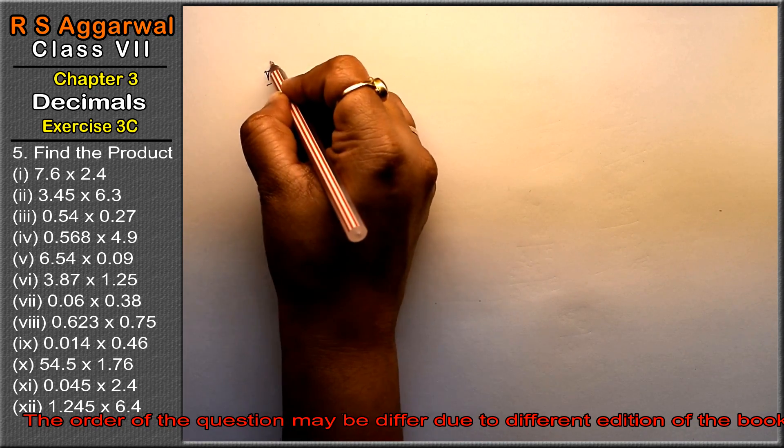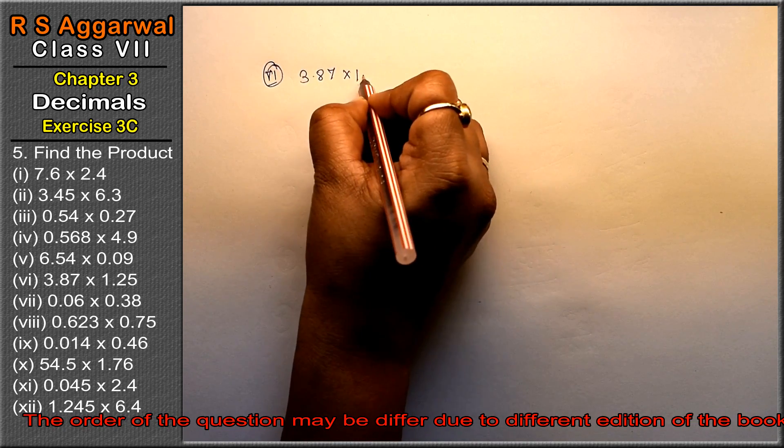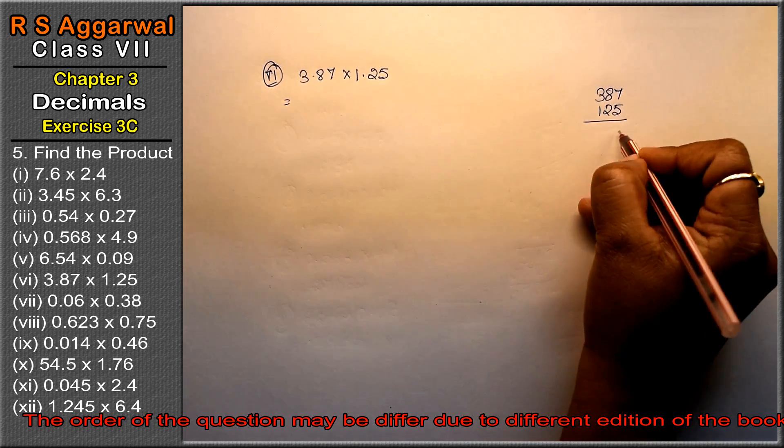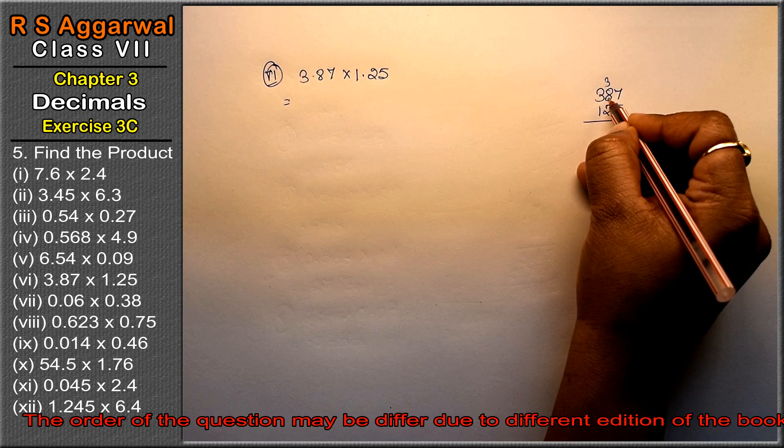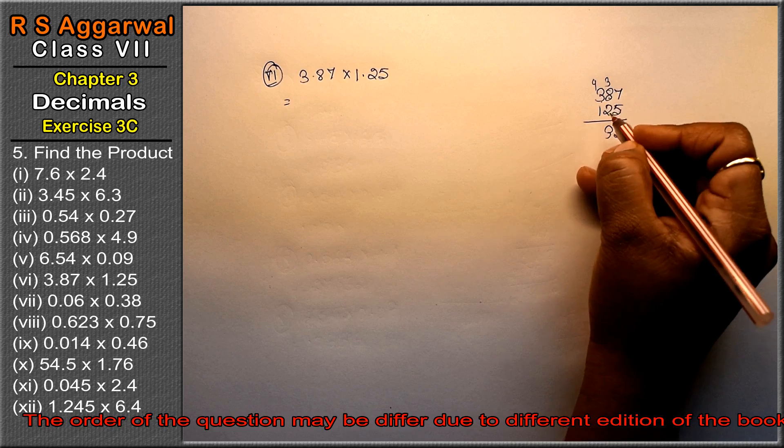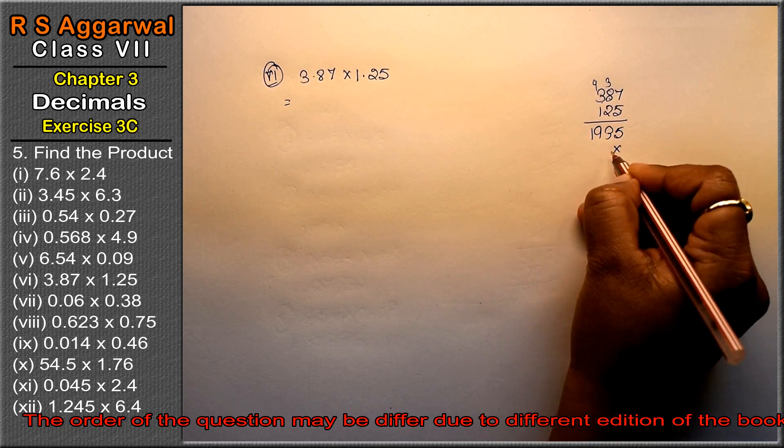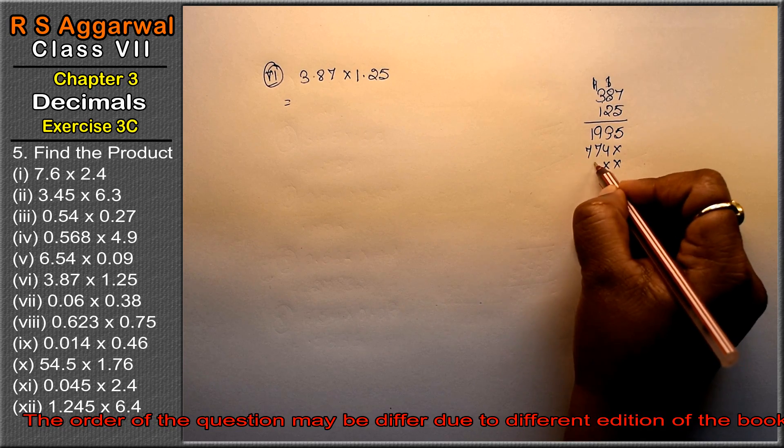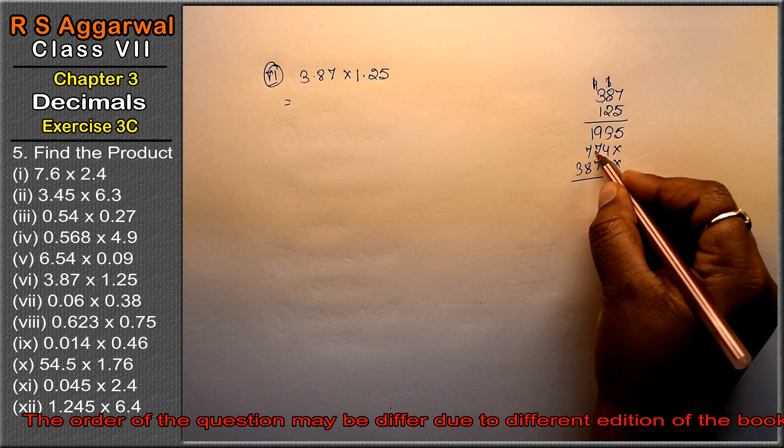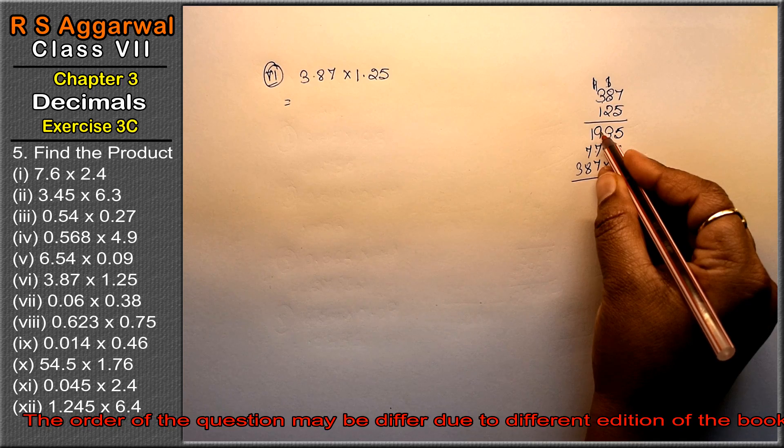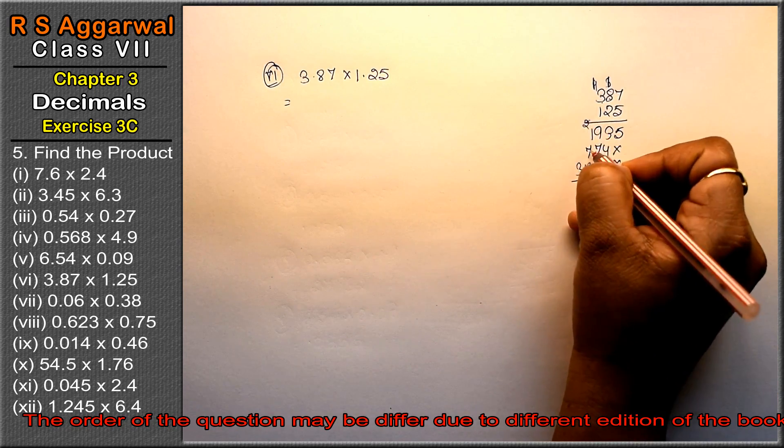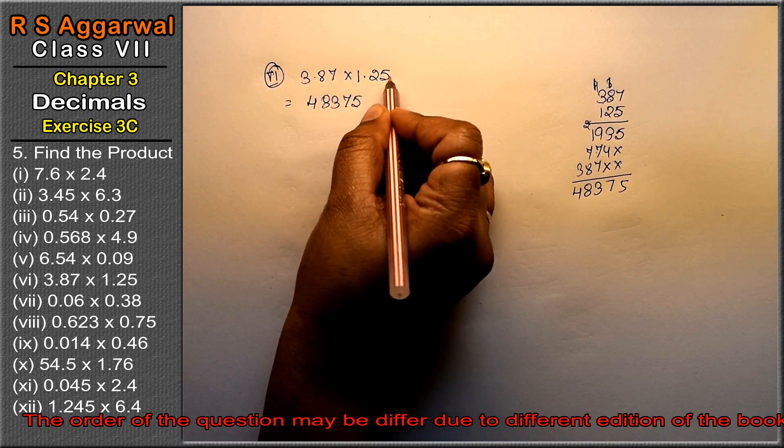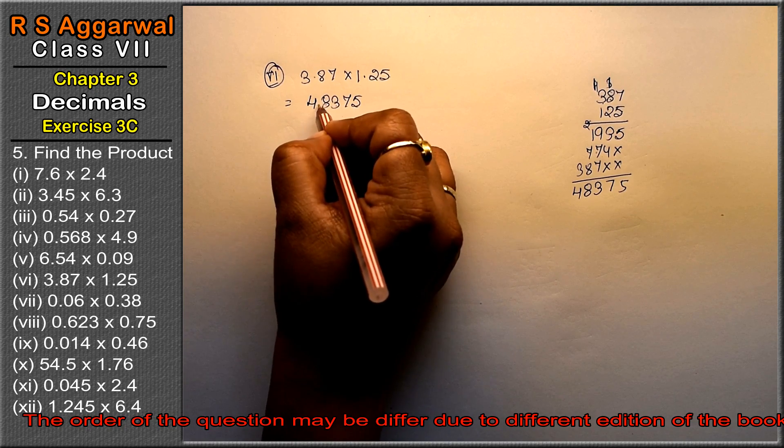Let's do sixth part: 3.87 into 1.25. Multiply 387 by 125. 5 times 7 is 35, 5 times 8 is 40, 5 times 3 is 15. Then 2 times gives second row. Then 1 times gives third row. Add all rows with carrying: 48375. Point kitne ki baad? 2 plus 2 is 4 decimal places: 1, 2, 3, 4 ke baad point. The answer is 4.8375.